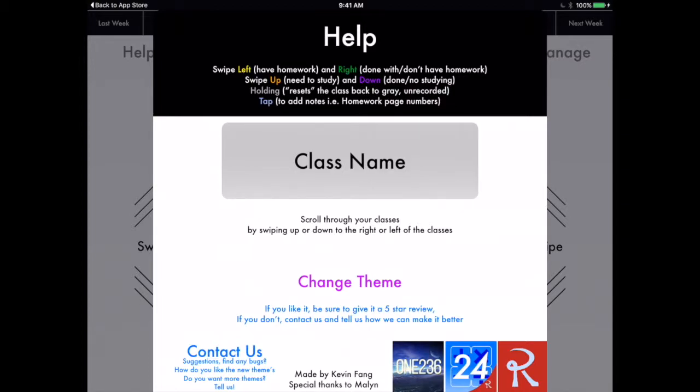Anytime you tap and hold on the class name, it's going to reset it back to gray. That means no yellow, no green, nothing. To add a note, you can write some specifics on what your homework is or what you need to study.